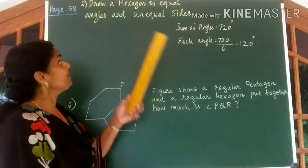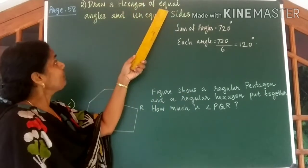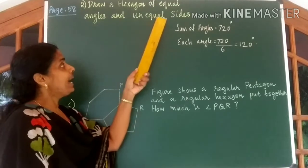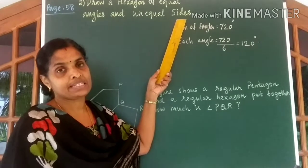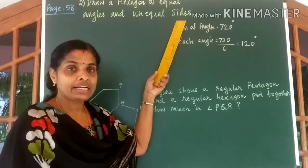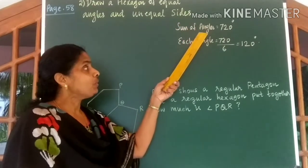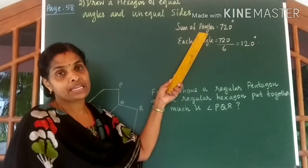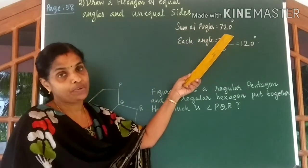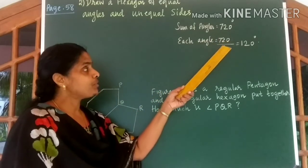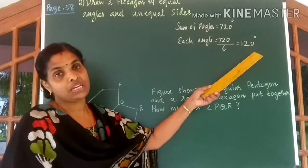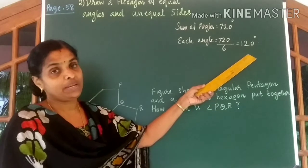Look at the question. Draw a hexagon of equal angles and unequal sides. We are going to draw a hexagon with all angles equal. We know sum of all angles in a hexagon to be equal to 720 degrees. So each angle would be 720 divided by 6 which gives you 120 degrees.